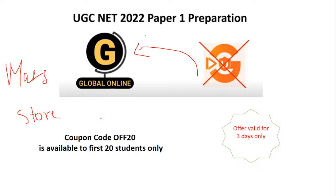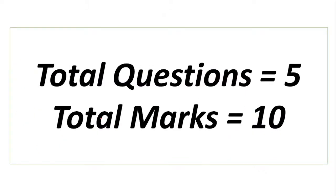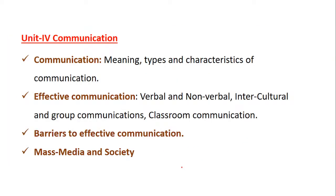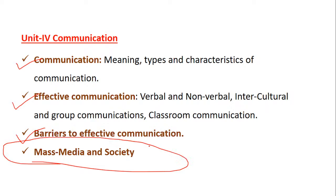Let's start without any delay as we are already a bit late due to a technical error. We are on the communication unit — total number of questions for this unit is 5, total marks is 10, so 2 marks per question. The syllabus topics we've already completed include communication, effective communication, and barriers to effective communication. Mass media and society — half was done last class covering objectives and importance — and today we'll complete the remaining part.